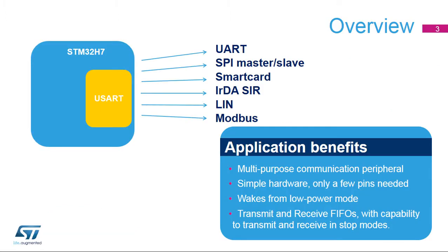The USART is a very flexible serial interface that supports asynchronous UART communication, SPI or Serial Peripheral Interface Master Mode, and LIN or Local Interconnect Network Mode. It can also interface with ISO IEC 7816 smart cards and IRDA devices. It also provides certain features that are useful when implementing Modbus communications.